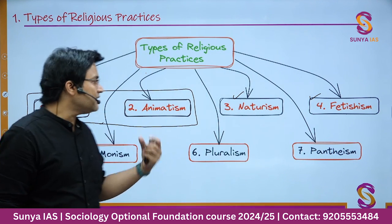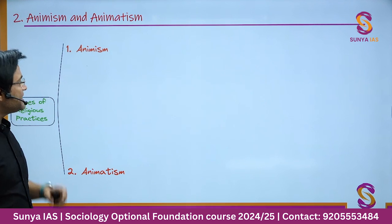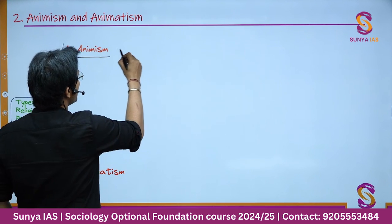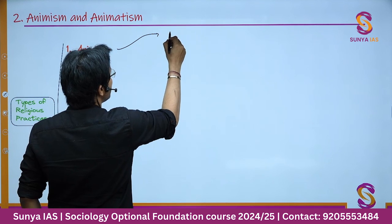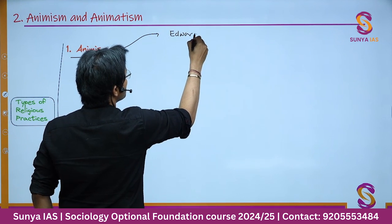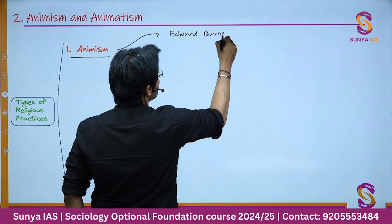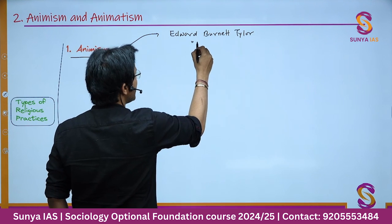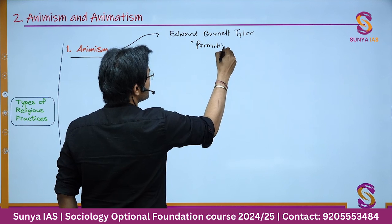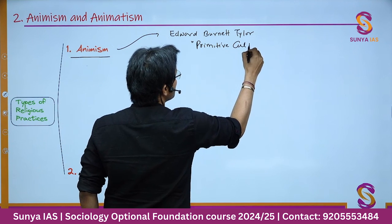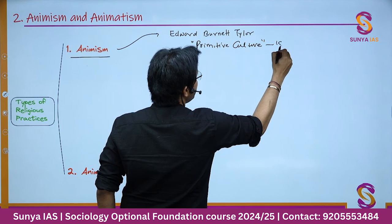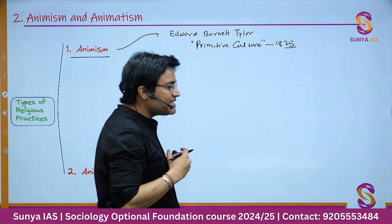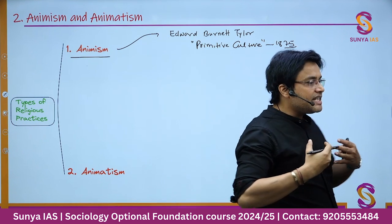The first concept is animism. This is a term that was coined by the very renowned anthropologist Edward Bernard Tyler in his famous book, 'Primitive Culture,' in 1875. Both these terminologies are basically associated with how religion evolved in society.